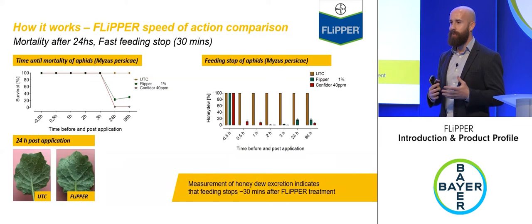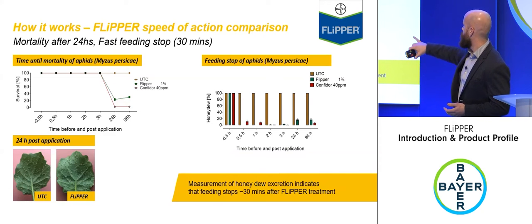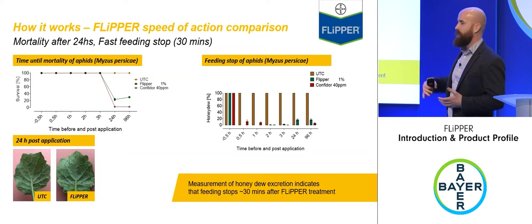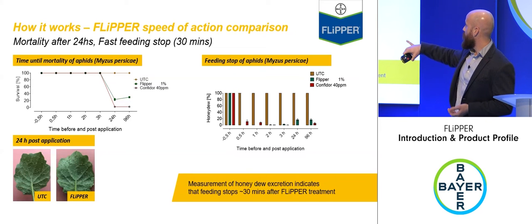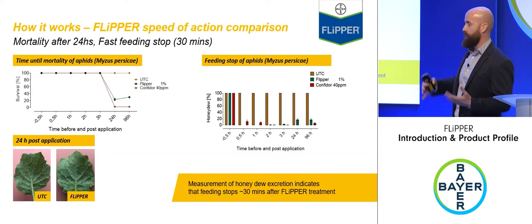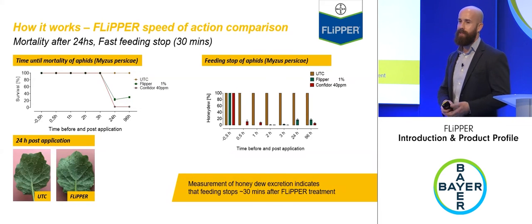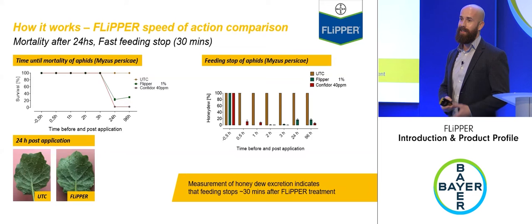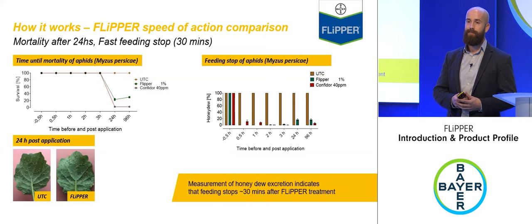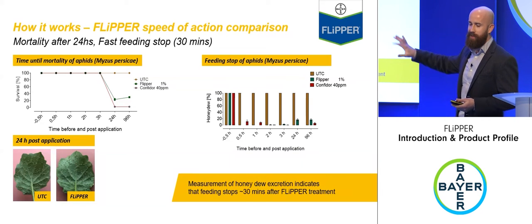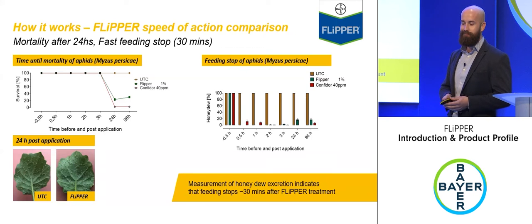For carrot growers concerned about virus transmission, what matters isn't just the death of the insect but how quickly it stops feeding. Bayer measured honeydew production as an indicator of feeding activity. Half an hour before application, all treatments showed lots of honeydew. Half an hour after application, Flipper and Confidor had almost completely stopped honeydew production — indicating feeding stops even within half an hour of application. All aphids on the Flipper-treated leaf were dead.